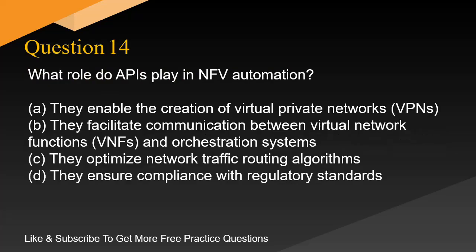Question 14. What role do APIs play in NFV automation? A. They enable the creation of virtual private networks (VPNs). B. They facilitate communication between virtual network functions (VNFs) and orchestration systems. C. They optimize network traffic routing algorithms. D. They ensure compliance with regulatory standards.